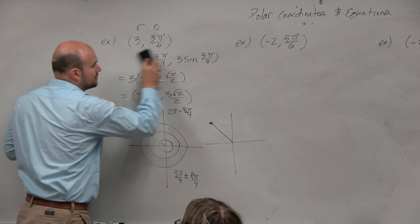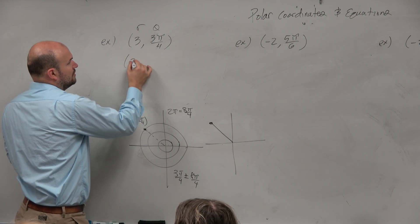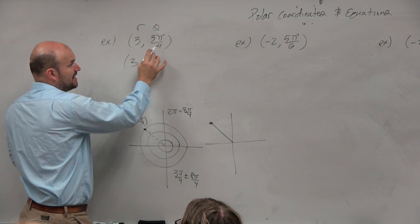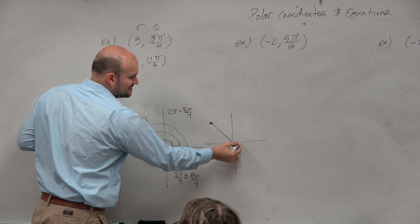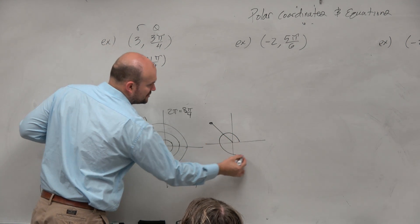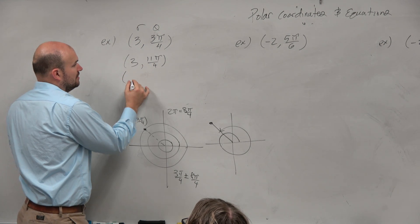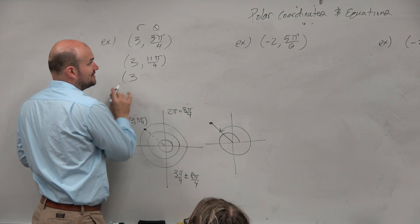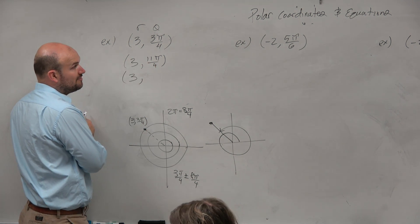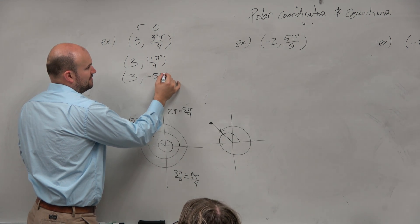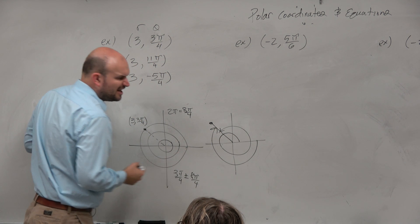When we add 8π/4 to 3π/4, that gives us 11π/4. Adding 2π takes you back to the same angle, so that's equivalent. And if we subtract 2π — that's 3π/4 minus 8π/4 — we get -5π/4. That checks out and works.